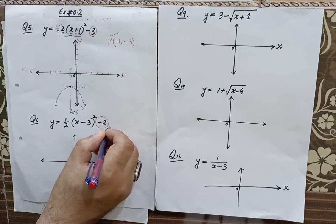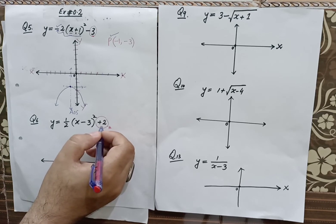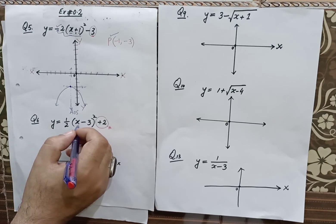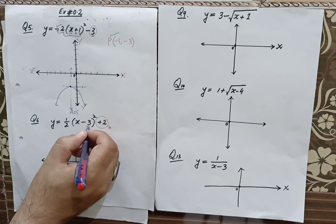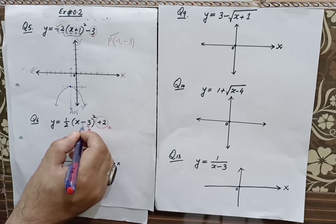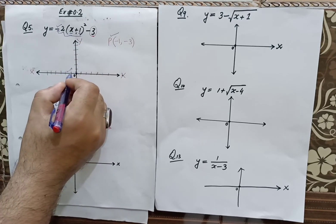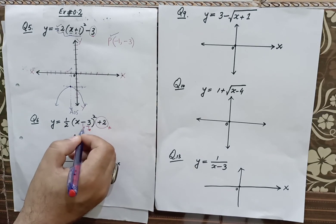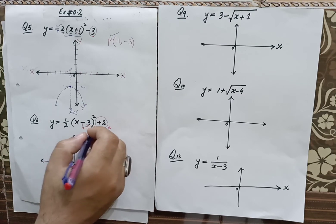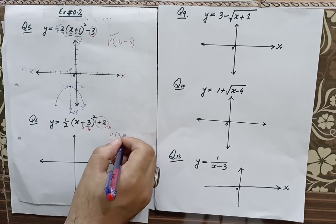If we have plus 2 units on the y-axis, the function translates to positive y-axis. Here, x minus 3 means minus 3 is the part of the function, so it translates on the x-axis. If it is negative inside the bracket, it creates a positive x-axis translation — positive 3 units on the x-axis. So the vertex is at positive 3 on x and positive 2 on y.